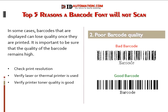The printed quality of the barcode is poor. In some cases, barcodes that are displayed fine on the computer can lose quality once they're printed. It is important to take into consideration the quality of the barcode. If the printed barcode is blurry or distorted, it may be a good idea to check the print resolution, as this may be a common cause. Also, avoid converting the font into an image such as a bitmap, as this will distort the barcode. Verify that a laser or thermal printer is used to print the barcode, and that the toner is good.